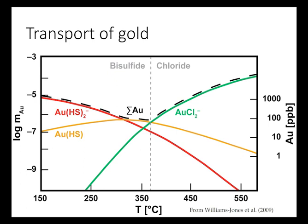This graph shows why this is. At lower temperatures, gold is carried in the AuHS₂⁻ complex more readily than as a chloride complex, which is how gold is carried in a lot of porphyry-type systems.